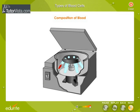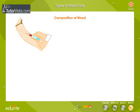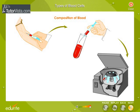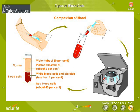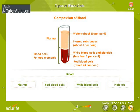Let us understand the method of finding out the composition of blood. Collect a sample of blood and transfer it into sterilized test tubes. Centrifuge the blood samples and observe the separated components under a microscope to study the composition of blood. The components of blood may broadly be divided into plasma and formed elements.